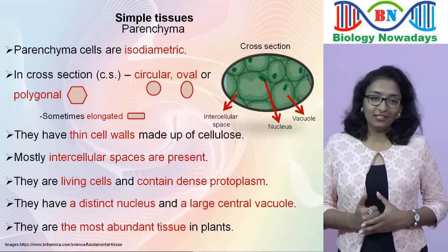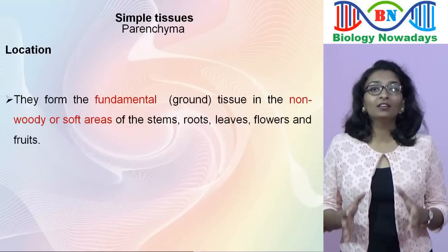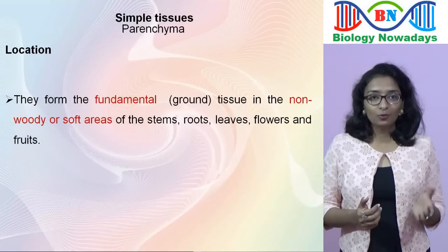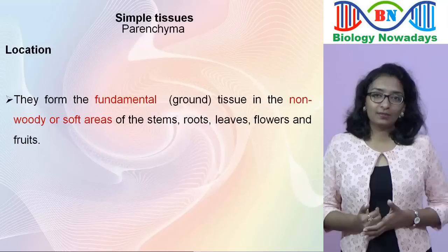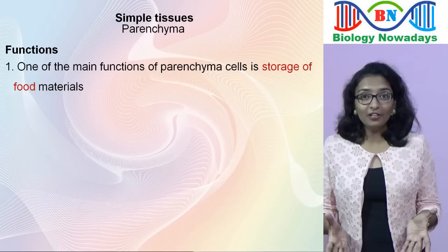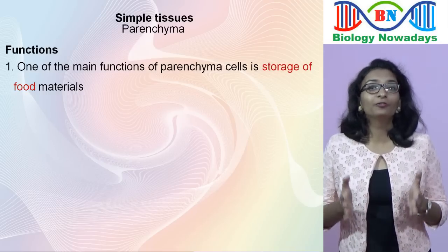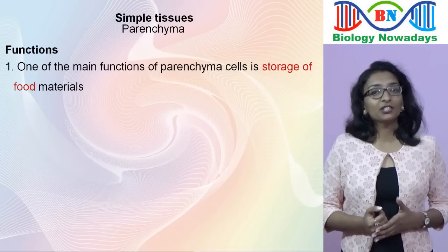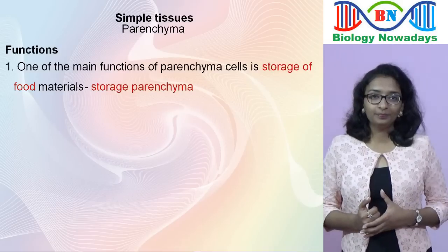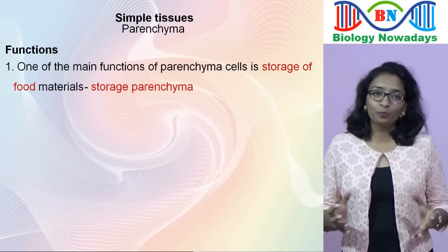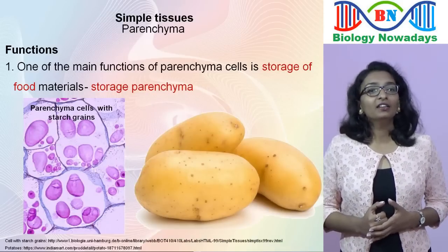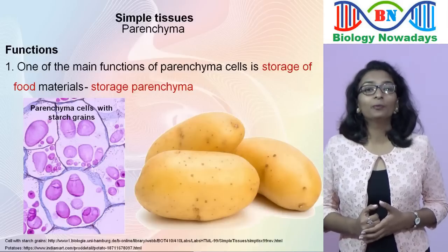Where are parenchyma cells found in plants? They form the fundamental or ground tissue in the non-woody or soft areas of stems, roots, leaves, flowers and fruits. One of the main functions of parenchyma cells is storage of food materials. Parenchyma cells which store large quantities of food are called storage parenchyma — for example, parenchyma of root tubers and stem tubers. Parenchyma cells with starch grains are found in potato tubers.